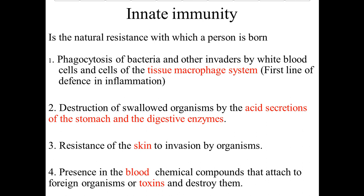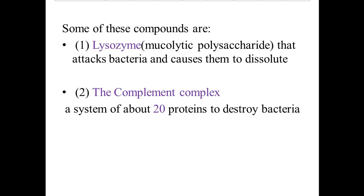Innate immunity is the natural resistance with which a person is born. Examples include: phagocytosis of bacteria and other invaders by white blood cells and tissue macrophages as a first line of defense; destruction of swallowed organisms by acid secretions of the stomach and digestive system; resistance of the skin to invasion by organisms; and presence of chemical compounds in the body that attach to foreign organisms or toxins and destroy them.